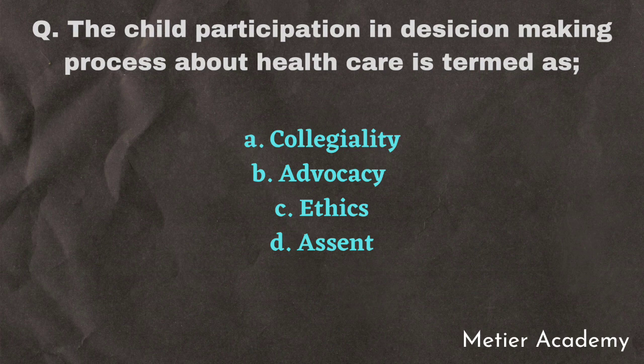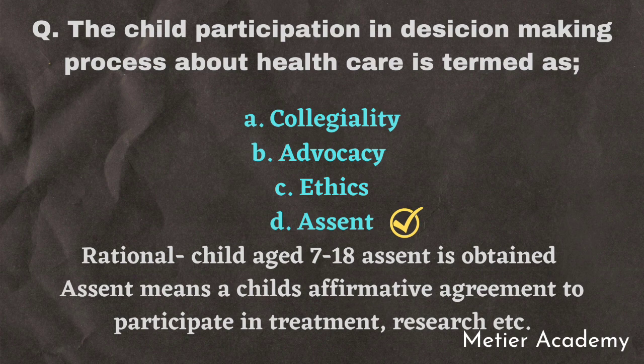The next question is: the child's participation in the decision-making process about health care is termed as — options are collegiality, advocacy, ethics, and assent. This question was asked in 2018 AIIMS Bhubaneswar toughness exam. The correct answer is Option D, assent. In the case of a child aged between 7 to 18 years, an assent is obtained instead of informed consent. Assent means the child's affirmative agreement to participate in treatment, research, etc.